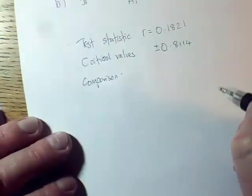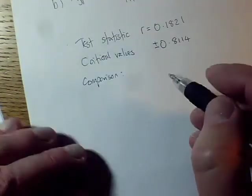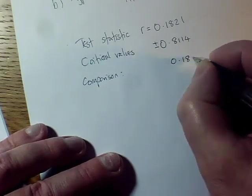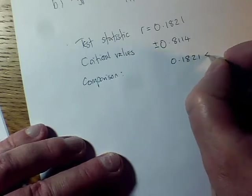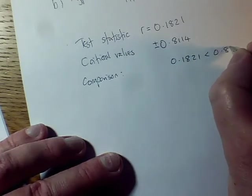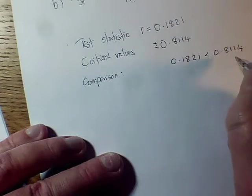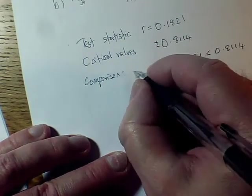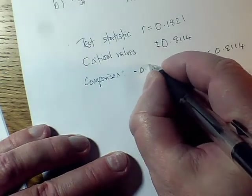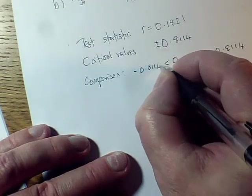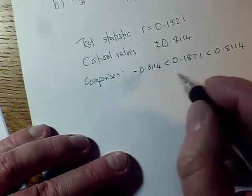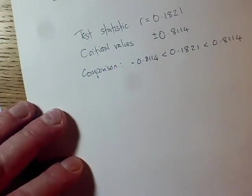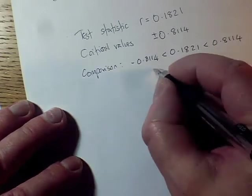So comparing my R value with this, I can actually see that 0.1821 is actually less than the critical value 0.8114, so that's the obvious one to compare with the positive critical value, but I should also just check that it's actually bigger than the negative critical value. So what that means is that it's in between these two critical values, it doesn't fall into either end zone. We haven't got into either critical region, so therefore...